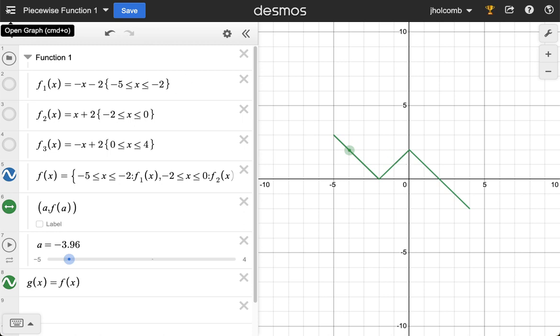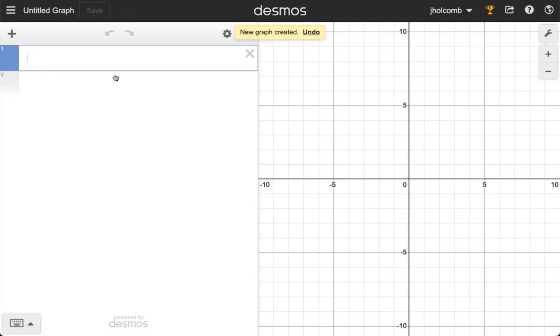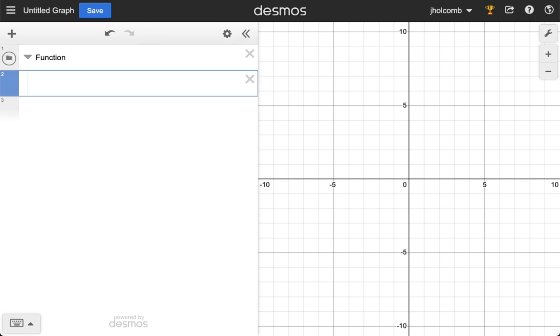I'm just going to start a new blank graph and the first thing I'm going to do is make a folder. It's nice to keep stuff organized and I'm going to write just function. I'm going to define my first function using function notation, so I'm just going to type f and then 1, and it immediately gives a subscript, and parenthesis x.